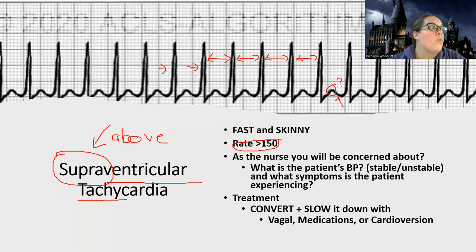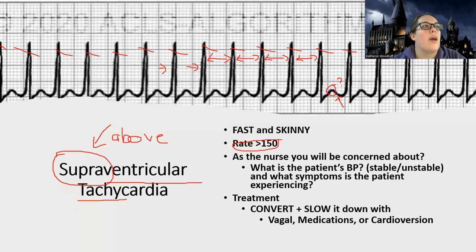So it's a fast rhythm — when you count, let's count: one, two, three, four, five, six, seven, eight, nine, ten, eleven, twelve, thirteen, fourteen, fifteen, sixteen, seventeen. So this would be a rate of 170. What I'm doing is multiplying how many pointy things there are by 10 — that's how we count rate. So I have a rate of 170, I'm fast, and my QRS is very skinny — less than three small boxes — very narrow.